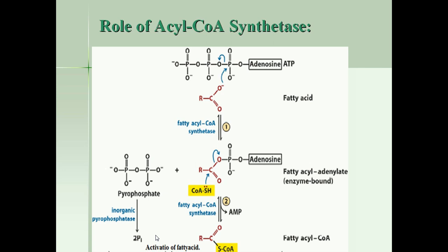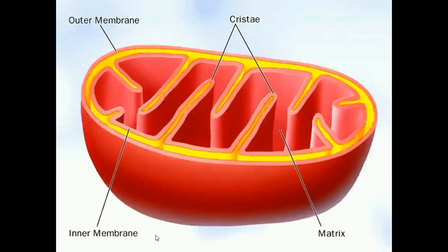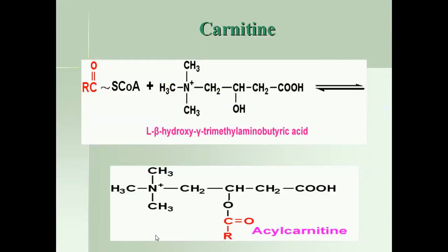Fatty acid oxidation — the carnitine shuttle system is required for further fatty acid oxidation. Oxidation takes place in mitochondria because the mitochondrial matrix contains the enzymes for fatty acid oxidation. Once the fatty acid becomes activated, it is ready to translocate from cytosol to mitochondria. Translocation: fatty acids enter mitochondria by carnitine transport.